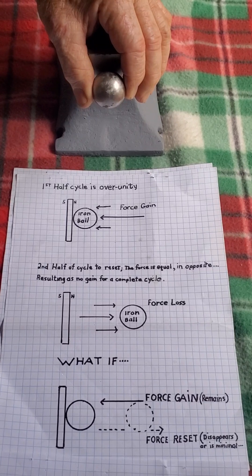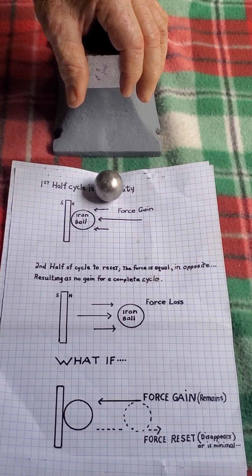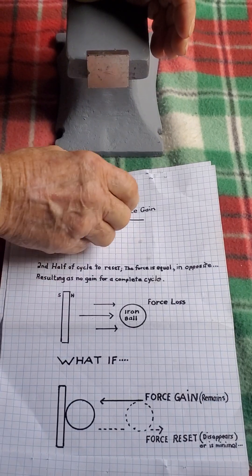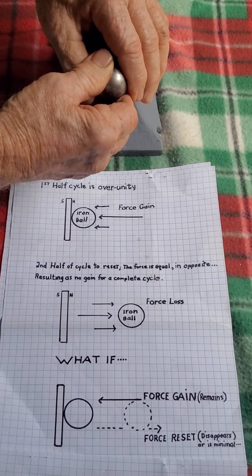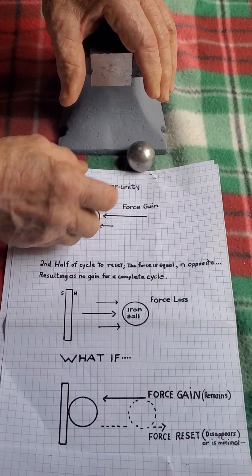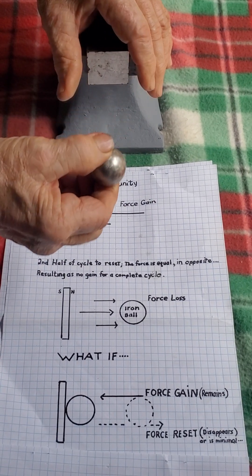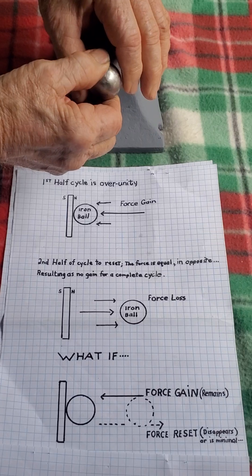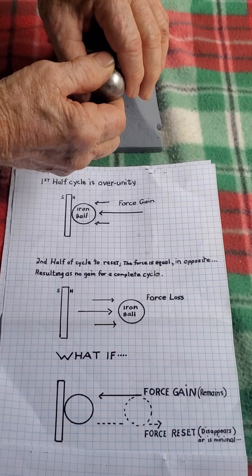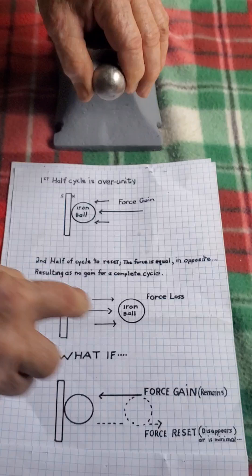But then, when we go to reset, there is no force loss. We have a force gain, but now we can reset it very easily. We have a gain, but no loss in resetting. We always have a plus element, which is the over-unity being produced.